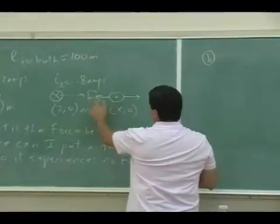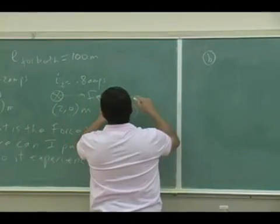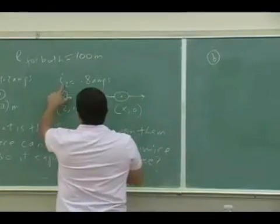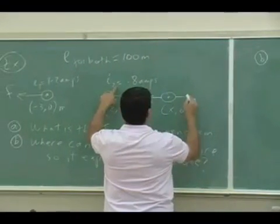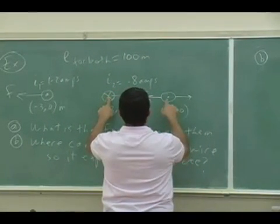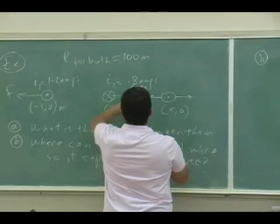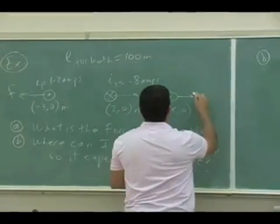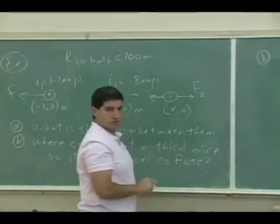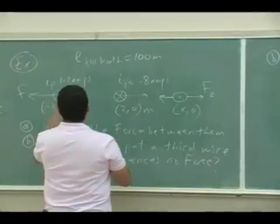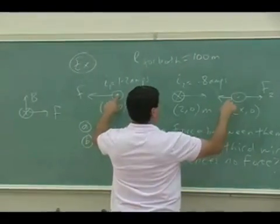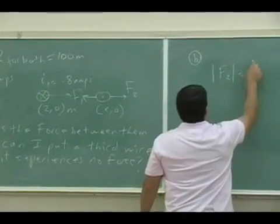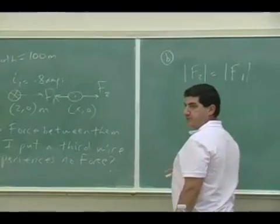So the force on this, due to that wire, let's call this one wire two, since that current is called I₂. So this one will do what to this? This one is opposite, so it's going to repel it. So this is F₂. And then this one is going to attract that one, so this is F₁. So I'm going to argue the magnitude of F₂ has to equal the magnitude of F₁.